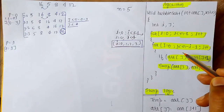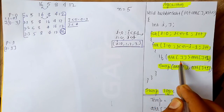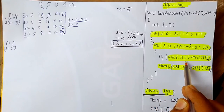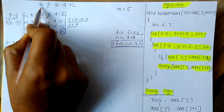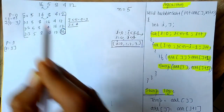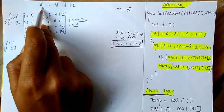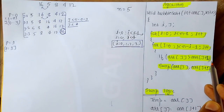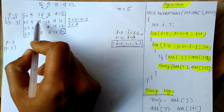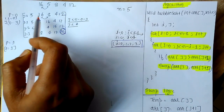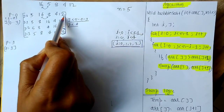First, with i=0 and j=0, we check: is array[0] greater than array[1]? Array[0] is 16 and array[1] is 5. Yes, 16 is greater than 5, so we swap. After swapping it becomes: 5, 16, 8, 4, 12.